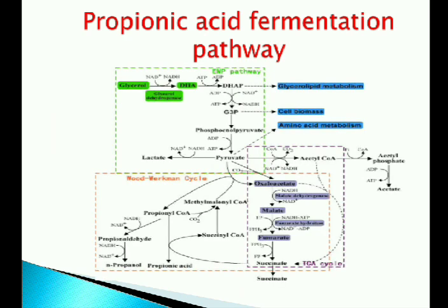Propionic acid fermentation pathway is an interlinked chain of three pathways: the EMP pathway, TCA cycle, and Wood-Werkman cycle. The pyruvates react with methylmalonyl-CoA to form propionyl-CoA and oxaloacetate. The oxaloacetate gives rise to malate, fumarate and succinate by the reverse TCA cycle. In the Wood-Werkman cycle, the propionyl-CoA transfers its CoA to succinate to form succinyl-CoA and propionate.